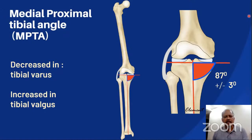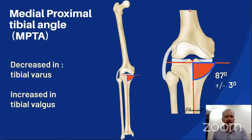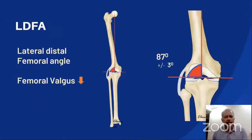The intersection of the mechanical axis of the femur and the tibia gives the amount of varus or valgus deformity. In addition to weight-bearing line and mechanical axis, it is important to assess a few more indices. One of them is the medial proximal tibial angle or MPTA, which is formed between the mechanical axis of the tibia and the tibial joint line. The normal value is 87 degrees plus or minus 3. It is decreased in tibial varus and increased in tibial valgus.